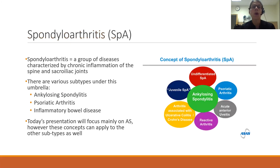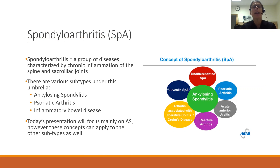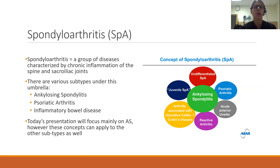So what is spondyloarthritis? It refers to a group of diseases characterized by chronic inflammation of the spine and the sacroiliac joints. There are various subtypes that fall under this umbrella term, including ankylosing spondylitis, which is the most common form. We will focus the majority of our time on ankylosing spondylitis, but other subtypes include psoriatic arthritis and inflammation of the spine associated with inflammatory bowel disease. Although we will focus mainly on AS, the principles discussed can apply to the other subtypes as well.